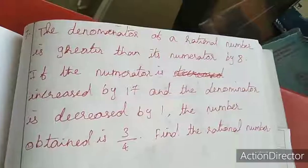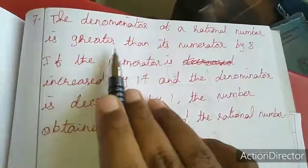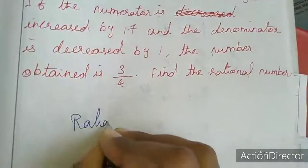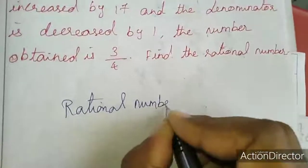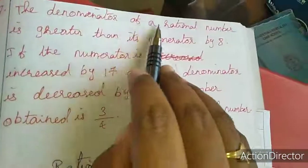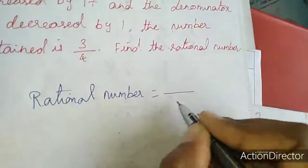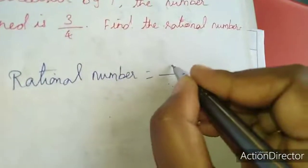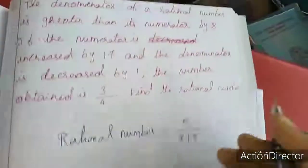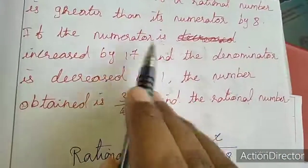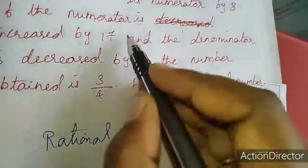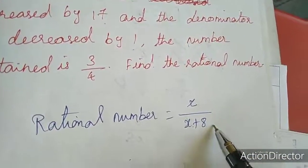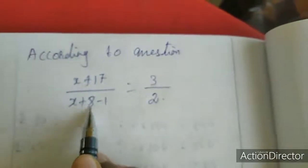We will move to the seventh sum. The denominator of a rational number is greater than its numerator by 8. A rational number is in the form p by q. So the denominator is greater than the numerator by 8. I am taking the numerator as x, so the denominator will be x plus 8. If the numerator is increased by 17 and the denominator is decreased by 1, then according to the question: x plus 17 divided by x plus 8 minus 1, equal to 3 by 2.